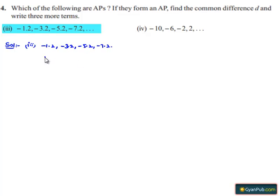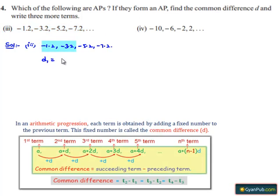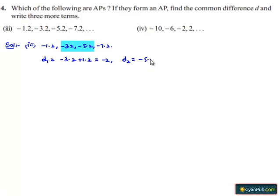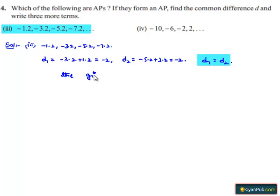Let d1 be the difference between the second and first term: minus 3.2 minus of minus 1.2, which equals minus 2. And d2 is the difference between the third and second term: minus 5.2 minus of minus 3.2, which also equals minus 2. Therefore, the difference between consecutive terms is equal, so the given series forms an arithmetic progression.